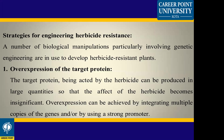A number of biological manipulations, particularly involving genetic engineering, are in use to develop herbicide-resistant plants. The target protein being acted upon by herbicides can be produced in large quantities so that the effect of the herbicides becomes insignificant. Over-expression can be achieved by integrating multiple copies of genes and by using a strong promoter.